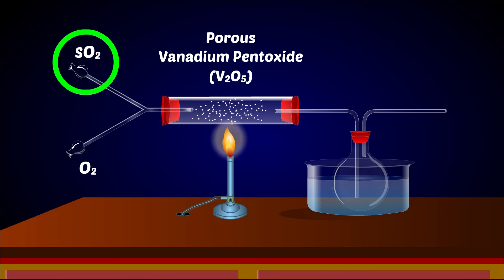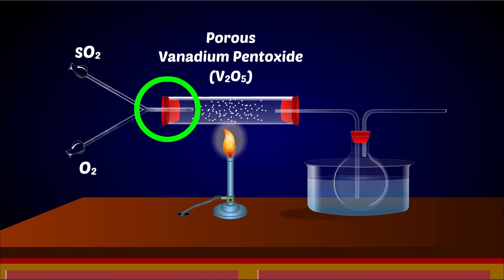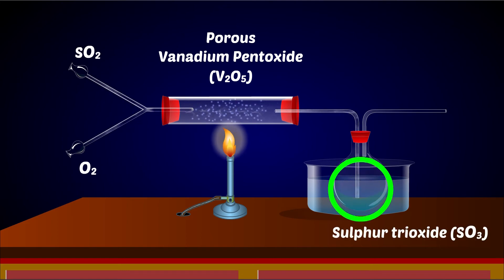Since the oxidation of sulphur dioxide is a slow process, the presence of vanadium pentoxide speeds up the equilibrium process and a high yield of sulphur trioxide is achieved in a short period.